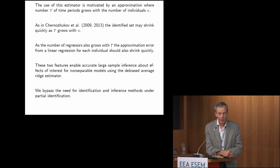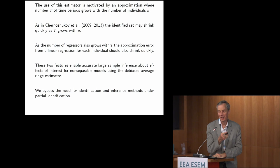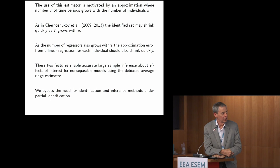Yvonne and I and others have worked on the partial identification problem and know that the identified set shrinks fast. But actually computing it in practice is a little harder, so we're happy to skip through that and go straight for a linear regression. We bypass the need for identification and inference under partial identification. We also provide ways of checking the extent of partial identification in practice to help determine whether the large-T theory is working.